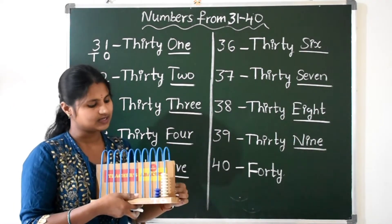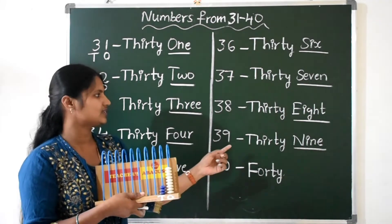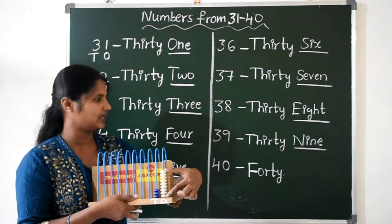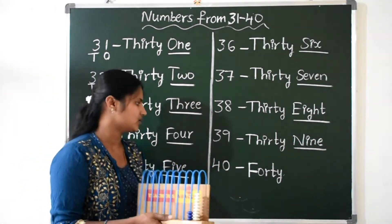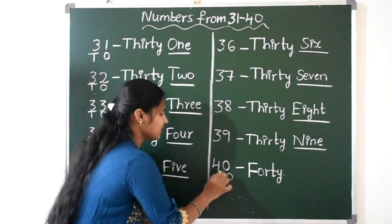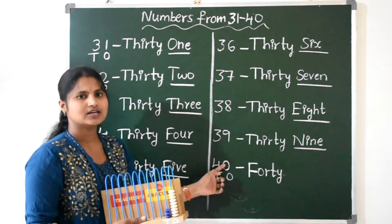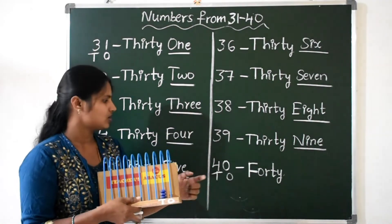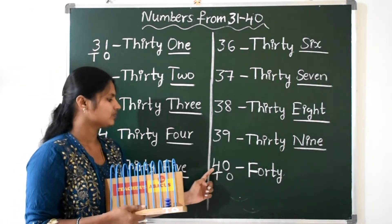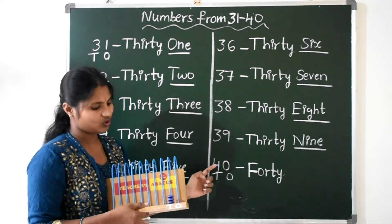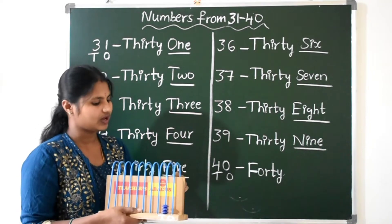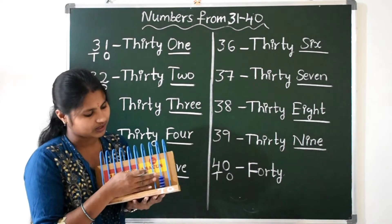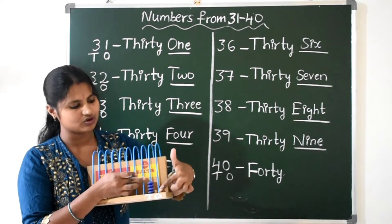Next, 39: 3 tens and 9 ones makes 39. Next, 40. 4-0, 40. Place value: ones place. How many ones here? 0 ones. So don't place any beads in the ones place. In tens place, how many beads? 4 beads — 1, 2, 3, and 1 more: 4. So 4 and 0 makes 40.